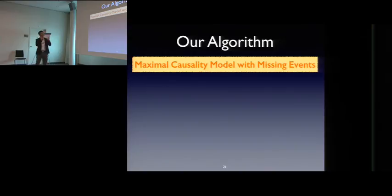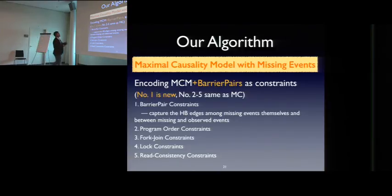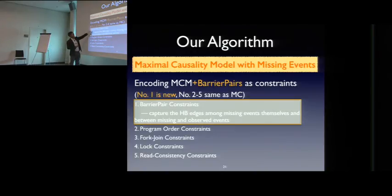Our algorithm is like this. So we extend the maximal causality model, which is actually used by the maximal causality race detection approach in previous work. And we extend this with missing method, with our barrier pair model. So we encode the maximal causality model and the barrier pair models as constraints. So basically, which includes the five items here. And from two to five, they are common to maximal causality model. What's new here is we have to add the barrier pair constraints. And basically, the barrier pair constraint captures the happens-before edges among missing events themselves and between the missing and observed events.